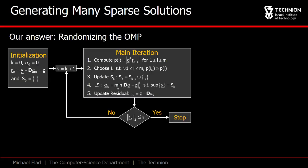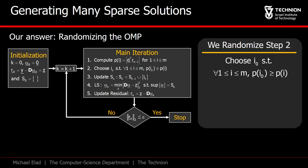Here is the OMP algorithm, and we will not describe all its steps as we have already done that. In the main iteration, on step two, we take the inner product of the residual with all the atoms and choose the maximal value to point to the atom that joins the support.